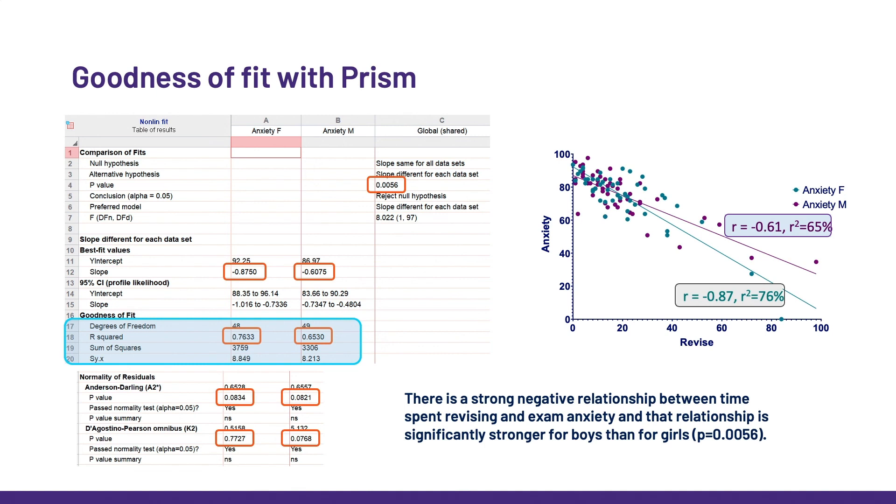And here it is. If we remove one girl, we increase the R squared by about 10 percent. And if we remove one boy, we increase the R squared by about 30 percent. So that one boy alone was taking away almost a third of the fit of our model. And now we can see that the normality guys do like the residuals. Okay, they are not thrilled about them, but our data passed the test. And now we can conclude with reasonable confidence that there is a strong negative relationship between time spent revising and exam anxiety, and that relationship is significantly stronger for boys than for girls.